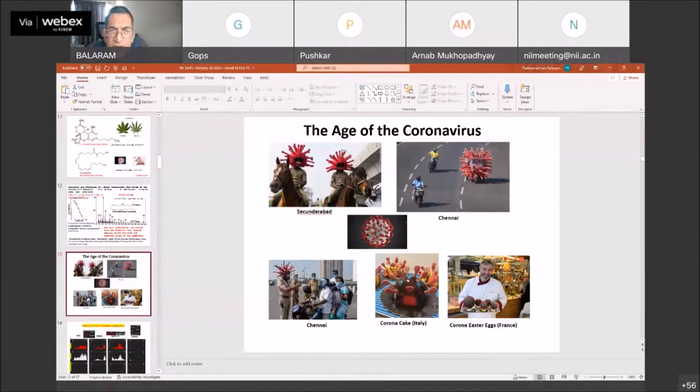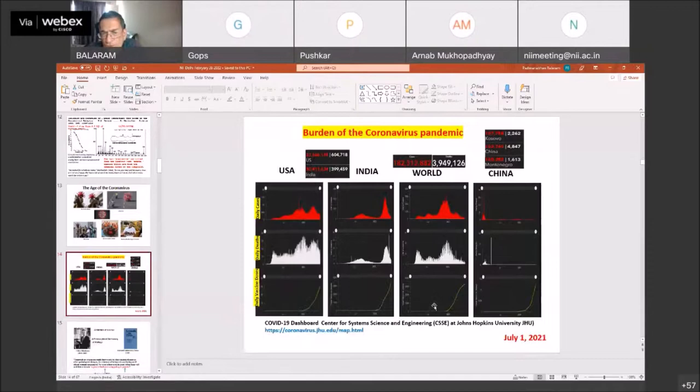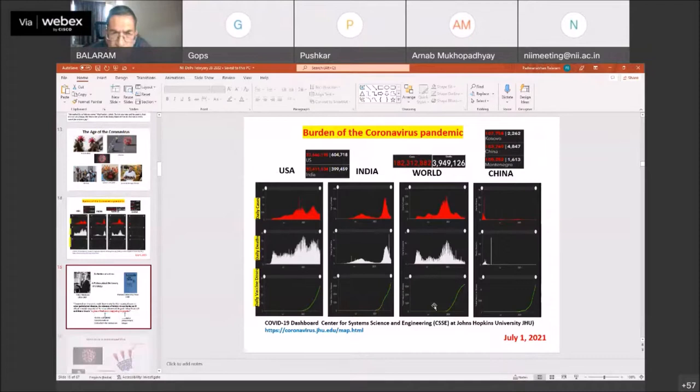We might now turn as a digression to the age in which we are, which I call the age of the coronavirus. When the coronavirus struck in early 2020, very soon there were all these images. Look at these images in Secunderabad, in Chennai, in Italy, in France. They have excited the imagination of everyone. It is that spherical particle with a spiky projection. We are all familiar with it now. Cakes have been made, helmets have been made, and even an auto rickshaw decorated with it. The coronavirus has taken a tremendous toll.